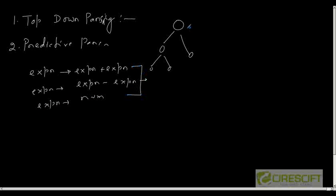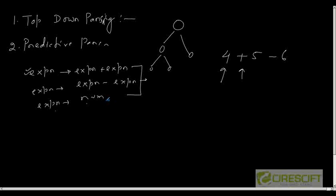The creation of the parse tree depends on which production I choose for a given non-terminal. For the non-terminal expression, I have three different productions. Suppose my input string is 4 plus 5 minus 6. The current input is 4 — I can apply expr as number. But then when the next input is plus, I cannot derive further. So at every step I need to predict which rule to select so that I can completely derive the input string.